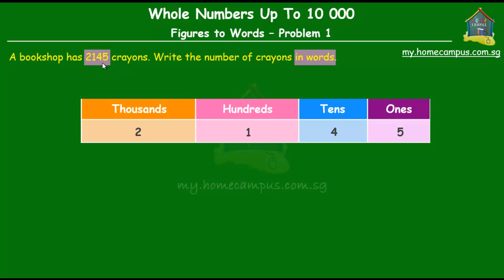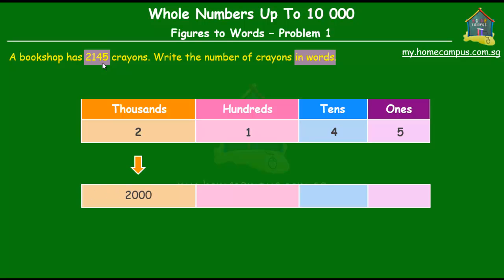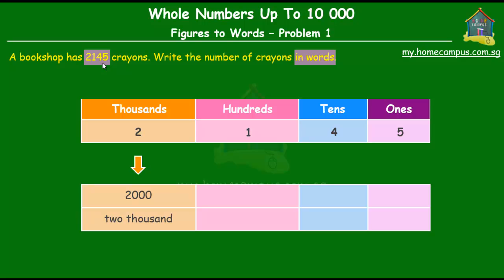Now from here, since we have the two in the thousands place its value is two thousand, so we write that down in words as two thousand. Next we have a one in the hundreds place so that stands for one hundred, so we write that down as one hundred in words.